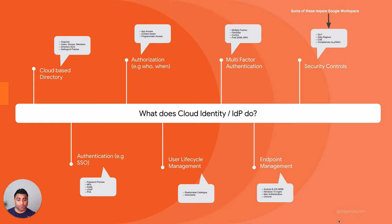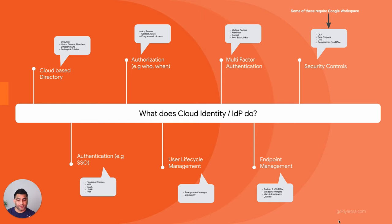There are additional security controls including data regions, where you decide where your data is hosted, and client-side encryption, where you retain the decryption key so even Google cannot access your Google Drive files. Compliance is also supported — for example, Google can sign a Business Associate Agreement with healthcare organizations. Google Workspace and Cloud Identity are also FedRAMP authorized, and FedRAMP High was in progress as of August 2021.